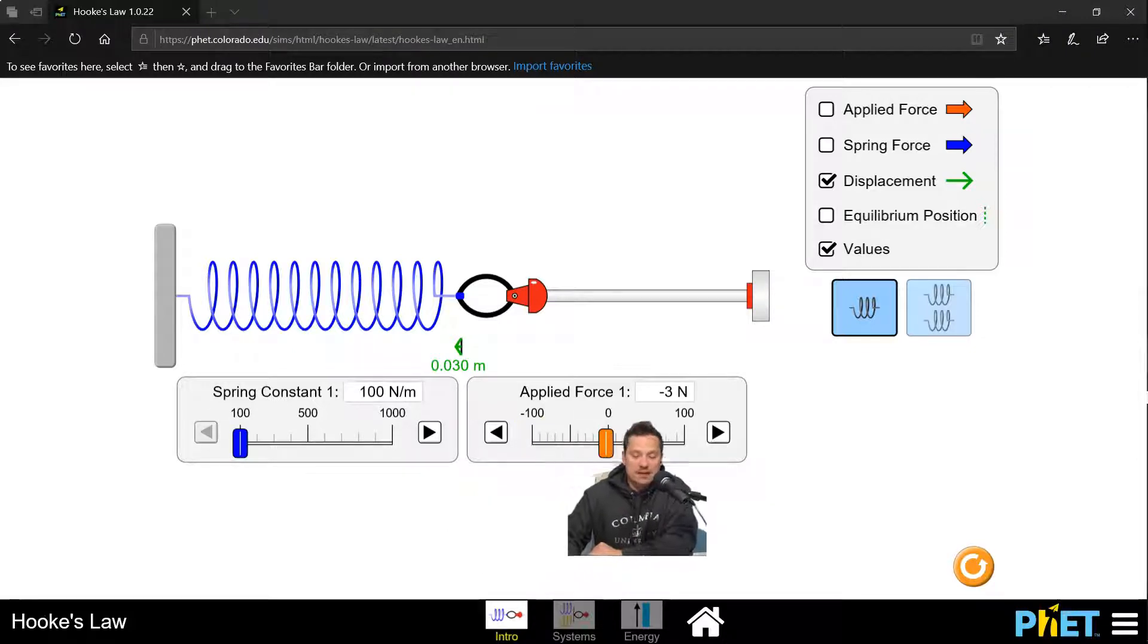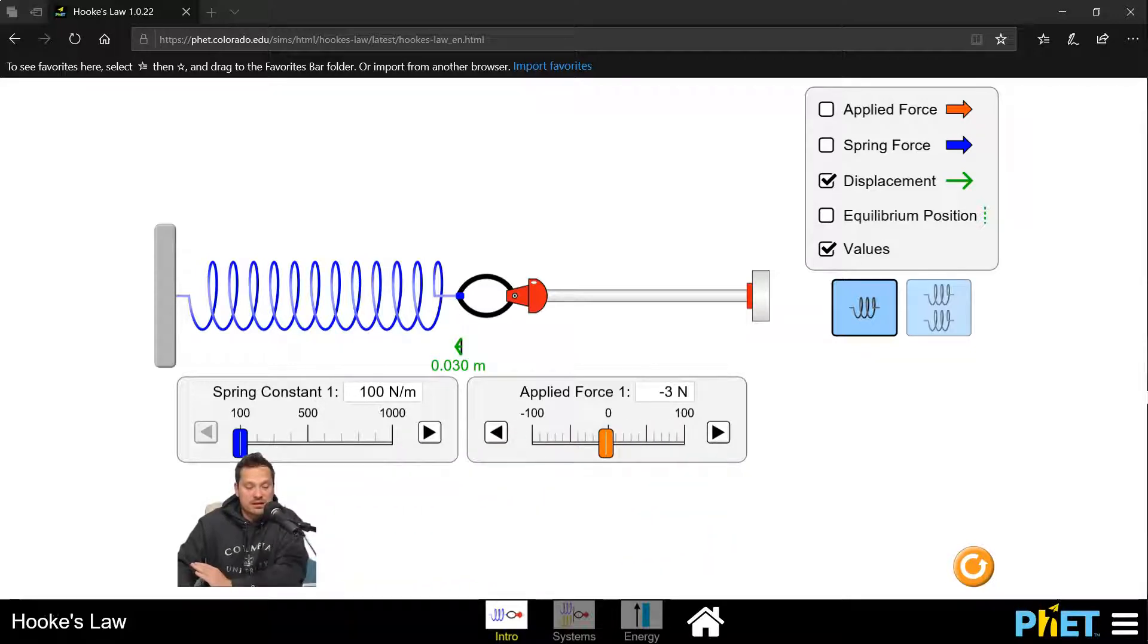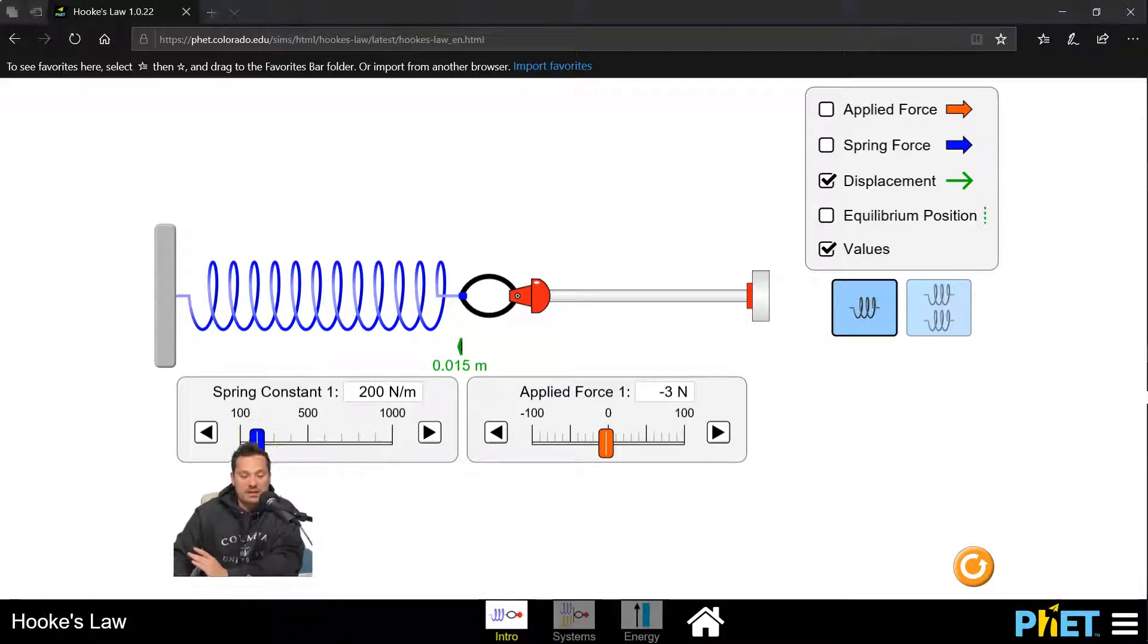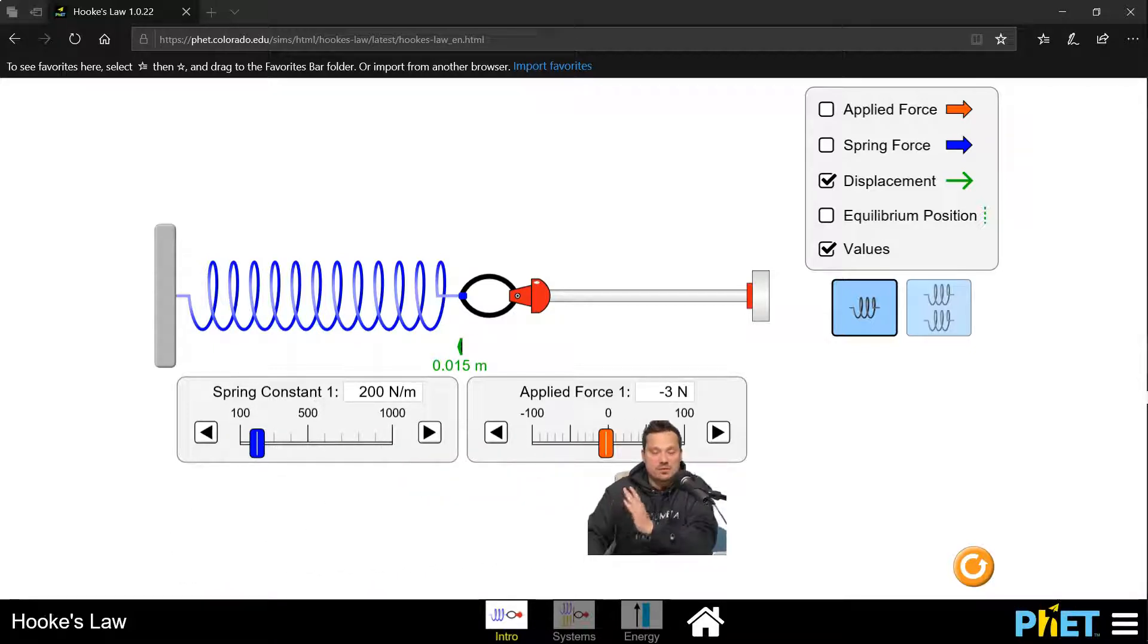Since our maximum applied force quantity there on the right side is, say, 100 newtons, imagine that I set the spring constant at 200 newtons per meter. Okay, about right there. So this is 200 newtons per meter, but our possible maximal force that we can apply is 100 newtons. And the puzzle question is, what's the maximum distance that you can stretch the spring?